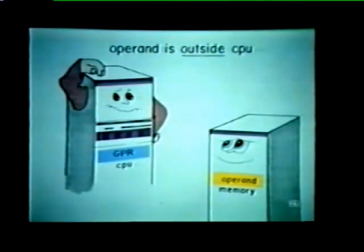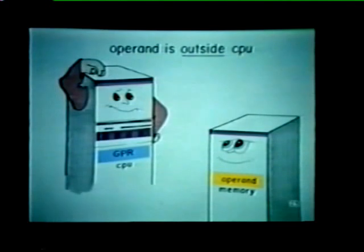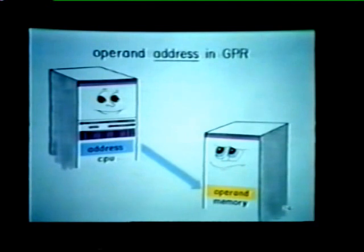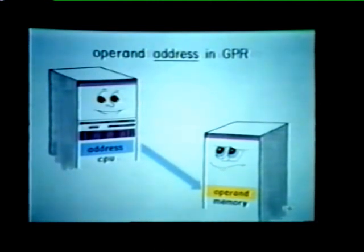Most operands are stored outside the CPU, either in memory or in I/O registers. Here we've stored an operand in a memory location, and now the CPU needs that operand in order to execute an instruction. How does the CPU locate the operand? Once again, we use our general purpose registers. However, this time we store the operand address in one of the GPRs. This address then directs the CPU to the desired operand. This example illustrates another use of our GPRs — they can store an operand address instead of the actual operand.